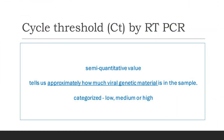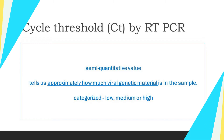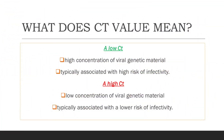CT value means cycle threshold by RT-PCR. It is a semi-quantitative value which tells you approximately how much viral genetic material is present in the patient sample. Based on that, it can be categorized as low, medium, and high.